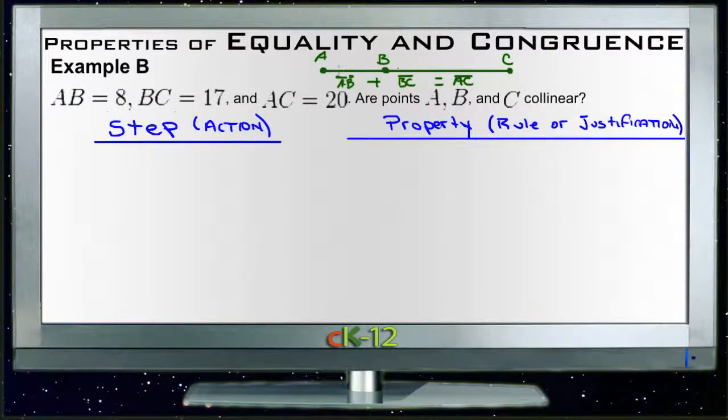So we just need to see if AB, which is 8, plus BC, which is 17, equals AC, which is 20. So we'll say our first information here tells us this is what we're looking for.